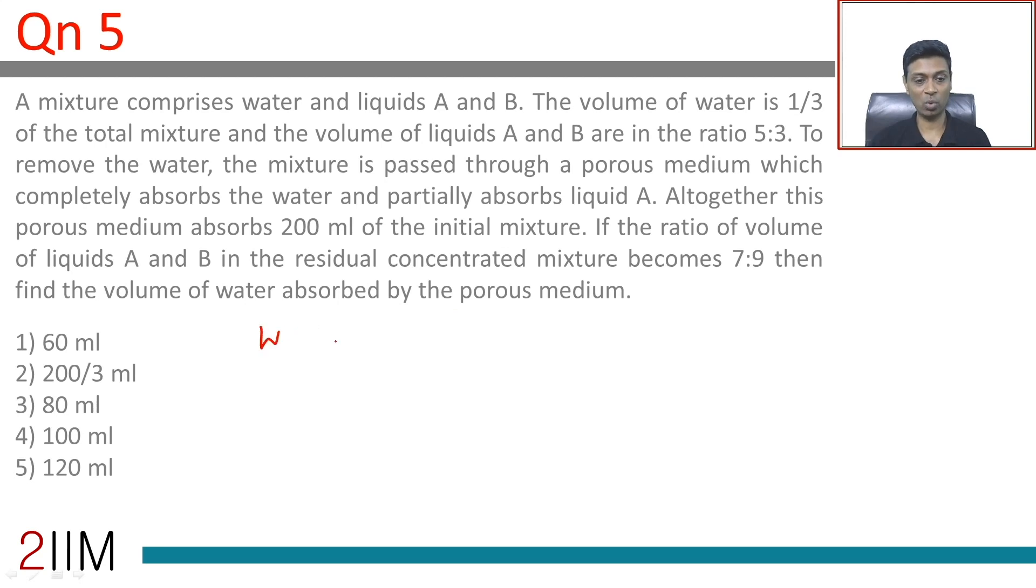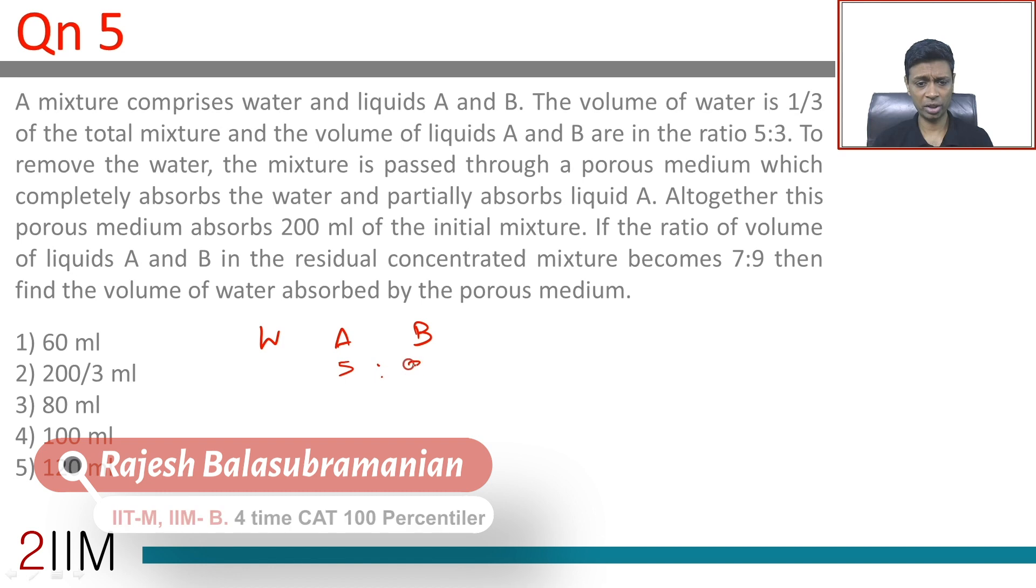A mixture comprises water and liquids A and B. The volume of water is one-third of the total mixture. The volume of liquids A and B are in the ratio 5:3.